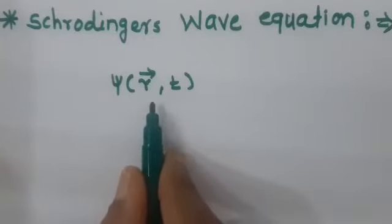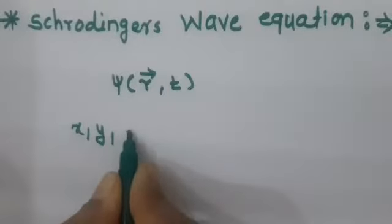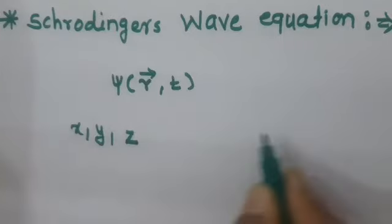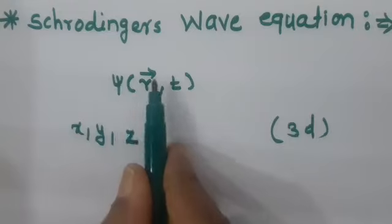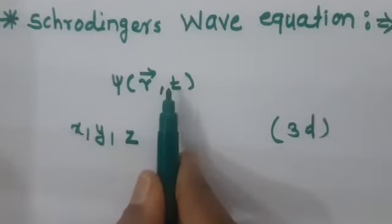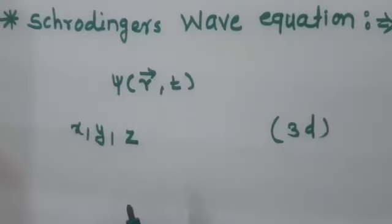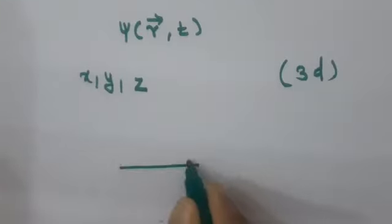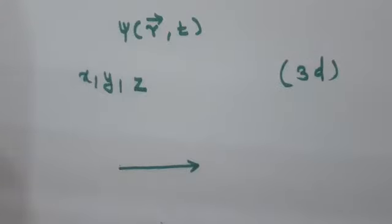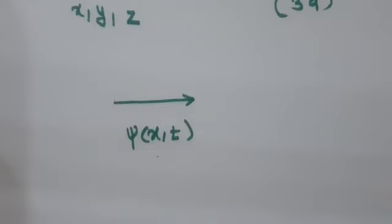Psi depends on x, y, z coordinates and time in the three-dimensional case. In three dimensions, psi is denoted as psi of r-vector and time t, which is a function of position coordinate r-bar and time t. If you have a system moving only along the x direction, then the wave function will be psi of x and t.